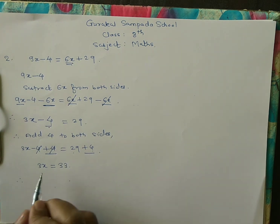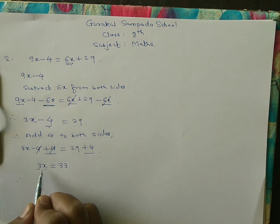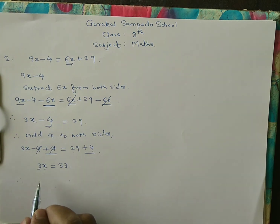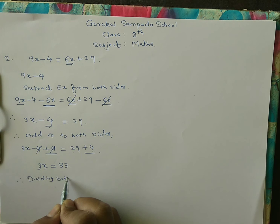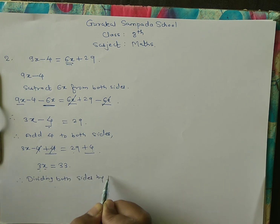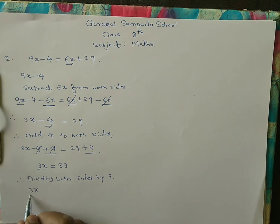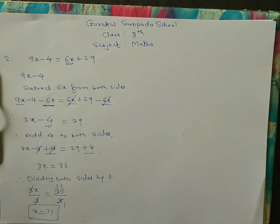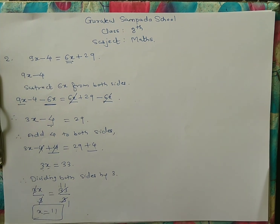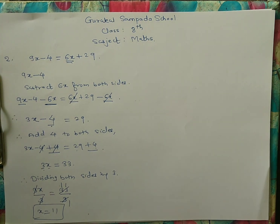The next operation is dividing both sides by 3 to cancel the 3. So 3x divided by 3 equals 33 divided by 3. The 3s cancel, giving x equals 11. This is the solution of the equation. I hope all of you understood how to solve equations in one variable. Thank you.